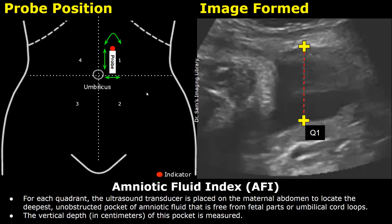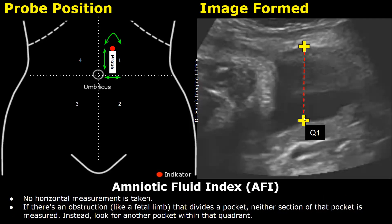For each quadrant, the ultrasound transducer is placed on the maternal abdomen to locate the deepest unobstructed pocket of amniotic fluid that is free from fetal parts or umbilical cord loops. This vertical depth is measured in centimeters. Only the vertical measurement is taken — do not take any horizontal measurements. If there is any fetal part or umbilical cord present, do not measure that pocket; look for another pocket within that quadrant.